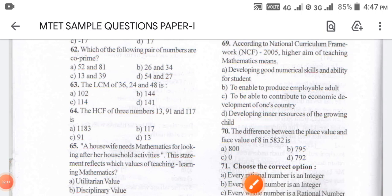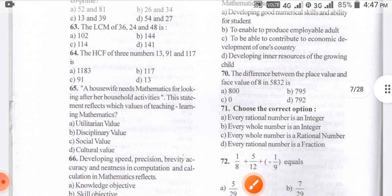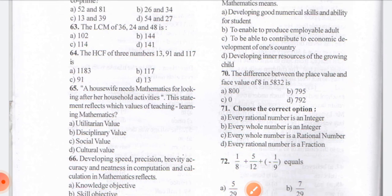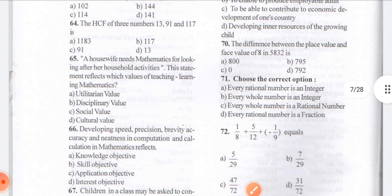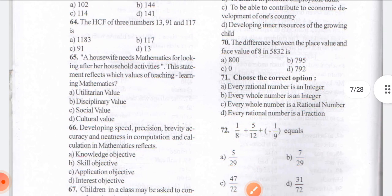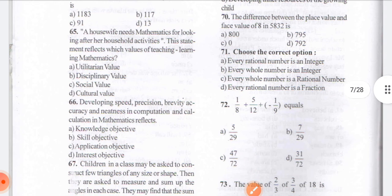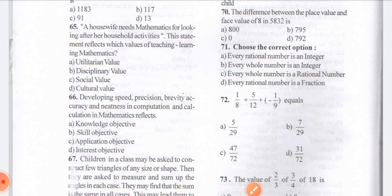When you find the factors, option A is the answer for coprime numbers. Coming to question number 63: a housewife needs mathematics for looking after the household activities. This statement reflects which of the following teaching-learning values in mathematics — utilitarian value, disciplinary value, social value, or cultural value?